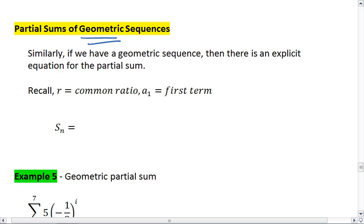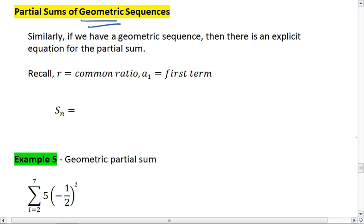We can also look at the partial sums for geometric sequences. Remember, geometric sequences have to do with multiplication, which means we let r be our common ratio and a1 be our first term. If we have a geometric sequence, just like with our arithmetic sequence, we get an explicit formula that helps us to sum this. The formula for a geometric sequence is we take the first term times 1 minus the common ratio to the nth power, all over 1 minus r.